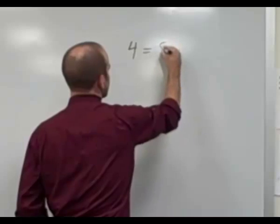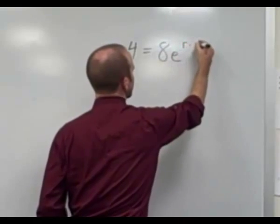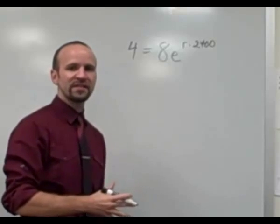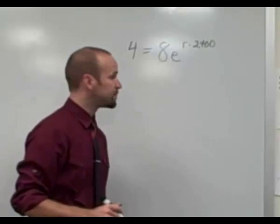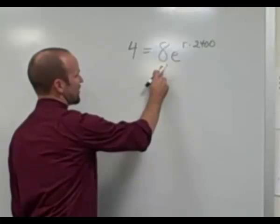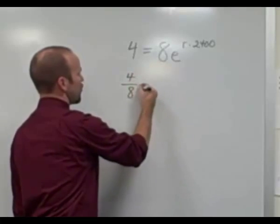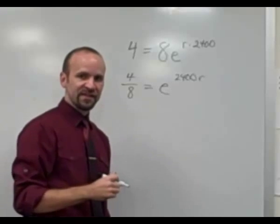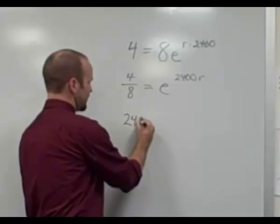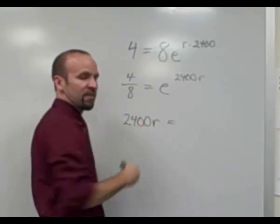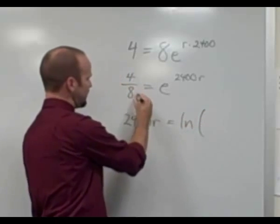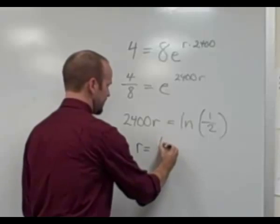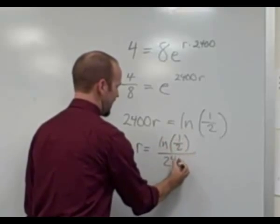We have 4 equals 8 e to the r times 2,400 power. I'm going to solve for r by first dividing both sides by 8. That gives 4 eighths equals e to the 2,400 r power. Then converting to logarithmic form, starting with the exponent: 2,400 r equals the natural logarithm of 4 eighths, which reduces to one half. So the rate of decay r equals the natural log of one half divided by 2,400.